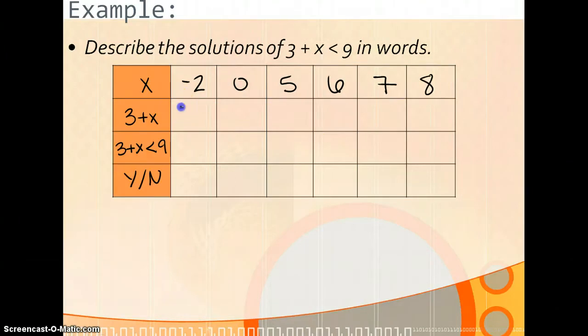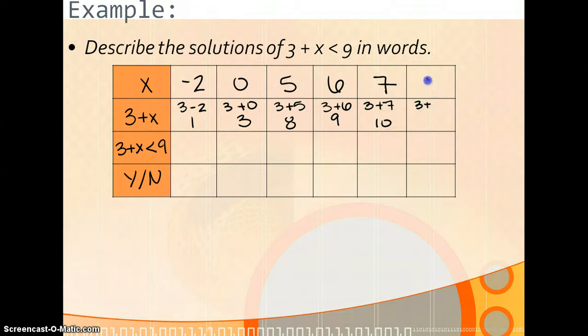If we plug in negative 2, 3 minus 2 is 1. If you plug in 0, 3 plus 0 is 3, 3 plus 5 is 8, 3 plus 6 is 9, 3 plus 7 is 10, and 3 plus 10 is 13. So, 1 less than 9, 3 less than 9, 8 less than 9, 9 less than 9, 10 less than 9, and 13 less than 9. That would be all of the verifications for the inequalities themselves.